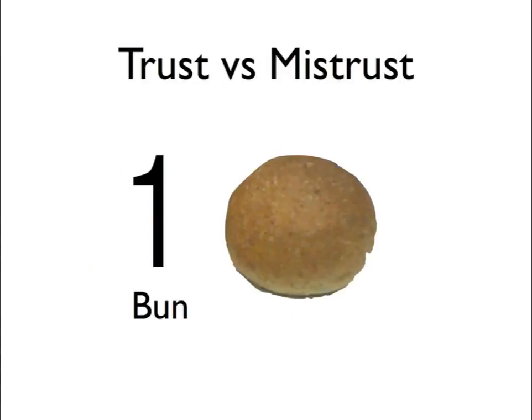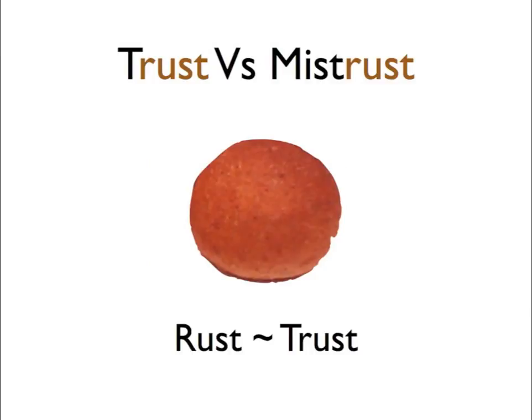So when we think about the number one, we say one is bun. Number one in the theory is trust versus mistrust. So we need a way so that when we see this bun in our minds we see trust or mistrust. If we picture the bun as rusty — notice how the word rust is in trust — when we think of our bun and we see the rust on it, we say rust, trust. Trust versus mistrust. That's kind of how the peg system works.